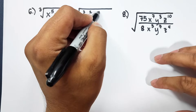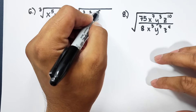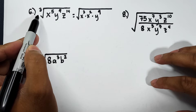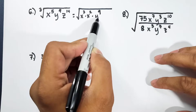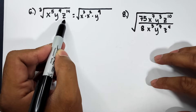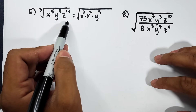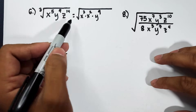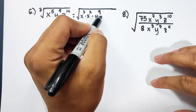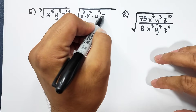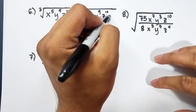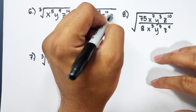For y raised to 9: since 9 is divisible by 3, it is a perfect cube, so y to the 9th remains as is. For z raised to 14: 14 is not a perfect cube, but we can factor it as z to the 12th times z squared, since 12 is divisible by 3.